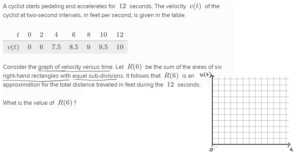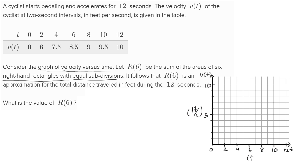Time goes between zero and 12, and they're giving it to us every two seconds: 0, 2, 4, 6, 8, 10, and 12 seconds. Our velocity goes between zero and 10 feet per second, so we mark off 1 through 10. This is in feet per second, and the time axis is in seconds.